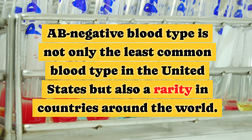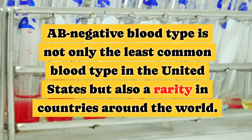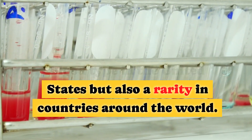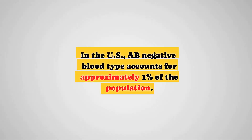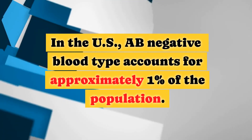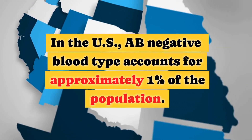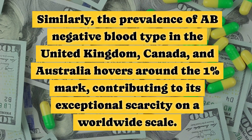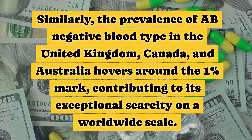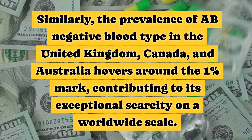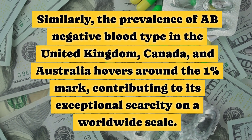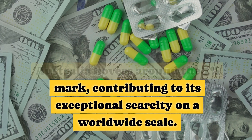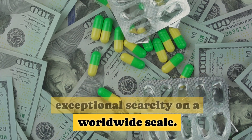AB negative blood type is not only the least common blood type in the United States, but also a rarity in countries around the world. In the US, AB negative blood type accounts for approximately 1% of the population. Similarly, the prevalence of AB negative blood type in the United Kingdom, Canada, and Australia hovers around the 1% mark, contributing to its exceptional scarcity on a worldwide scale.